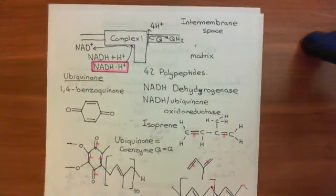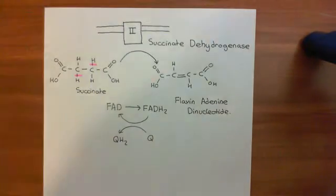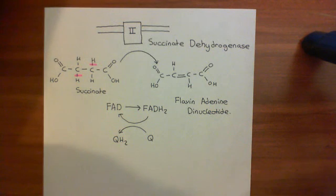Complex 2 doesn't do that. That's the difference between Complex 1 and Complex 2. Complex 1 contributes to the building up of this proton gradient across the inner membrane, whereas Complex 2 does not. We'll continue this discussion in the next video.